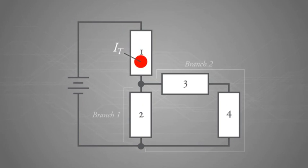When IT reaches node number one, the circuit's total current splits into two currents labeled IB1 and IB2. The amount of current entering node one equals the sum of the two currents leaving node one.